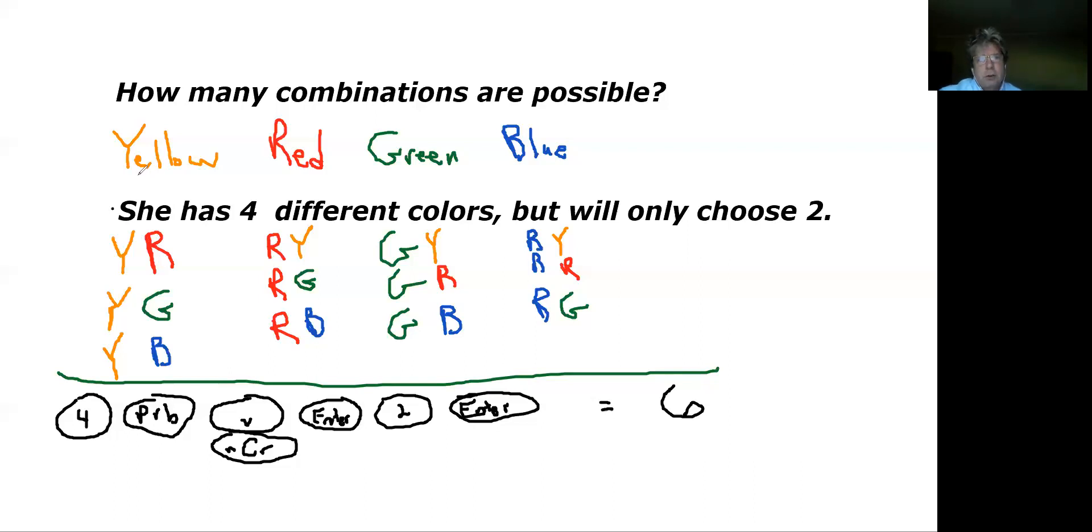If she starts with yellow, she could do a yellow and a red, she could do a yellow and a green, and she could do a yellow and a blue. She'd have three choices there.